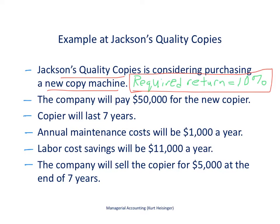Here are the cash flows: we're going to pay $50,000 for this new copier, and it's going to last about seven years. Annual maintenance costs will be $1,000 a year, and labor cost savings will be $11,000 a year. We plan to sell this copier at the end of seven years for $5,000. Those are our cash flows, and we'll map this out to determine what our internal rate of return is.